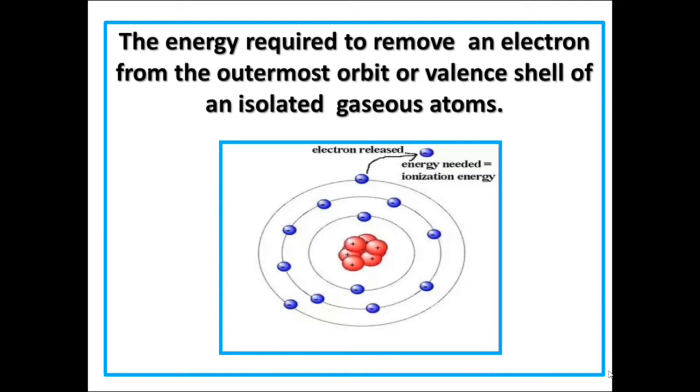The energy required to remove an electron from the outermost orbit or valence shell of an isolated gaseous atom. Observe this diagram. The valence shell having two electrons. If you remove the electron, the energy required - that energy is known as ionization energy.